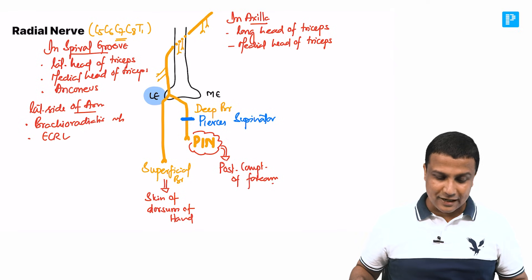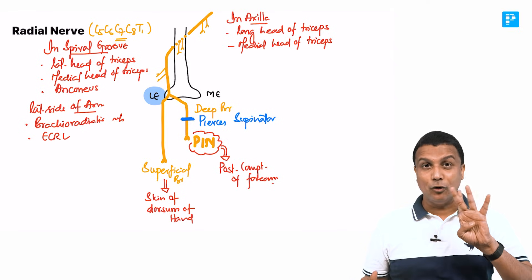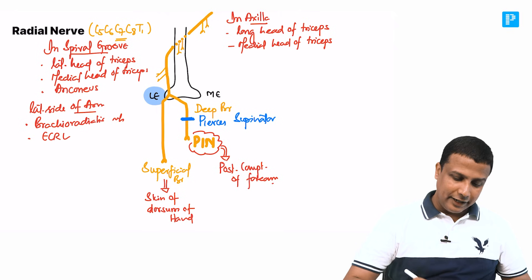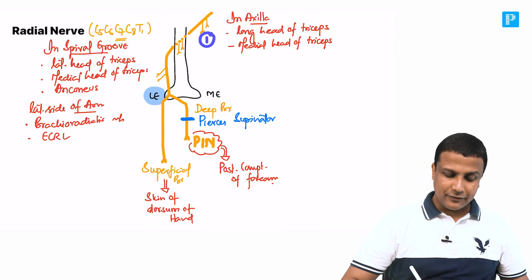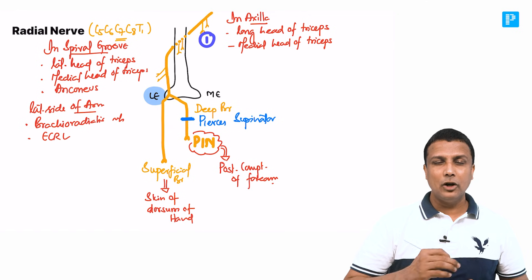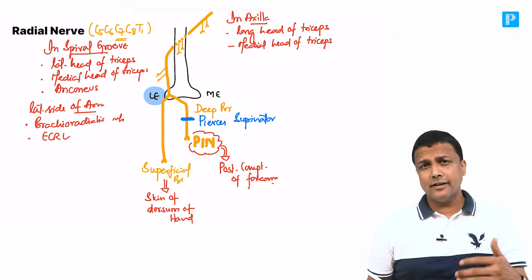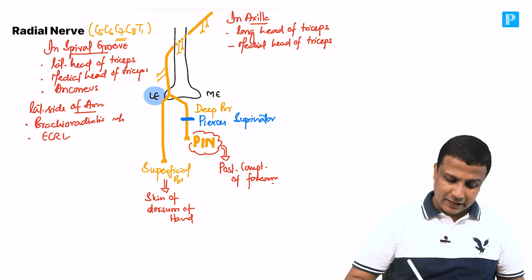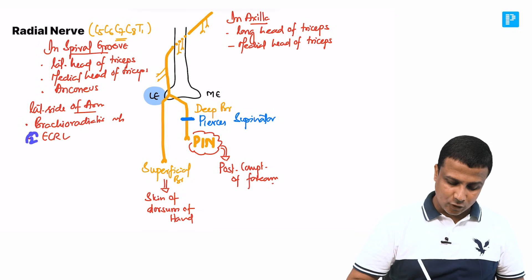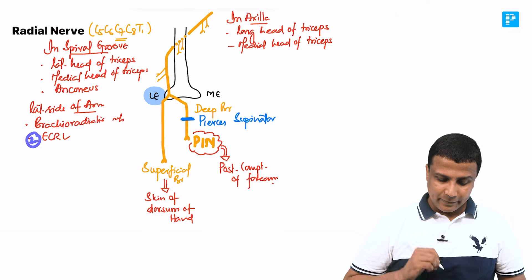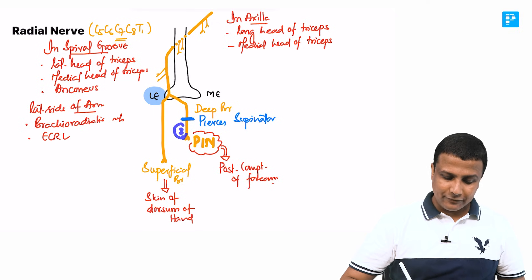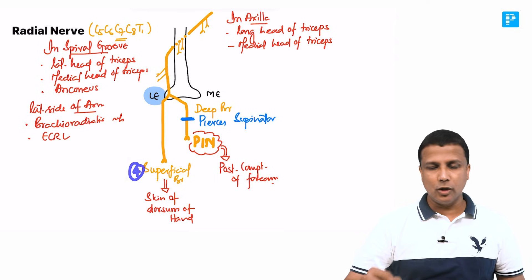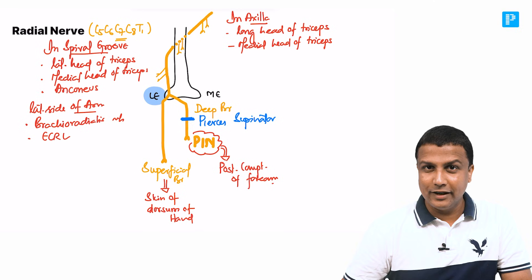From today onwards, concentrate on these four important points whenever dealing with a radial nerve injury. Number one — triceps gone: loss of extension at the elbow joint, flexed elbow. Number two — ECRL gone: wrist drop. Number three — PIN gone: finger drop. Number four — superficial branch gone: loss of sensation on the dorsum of the hand.